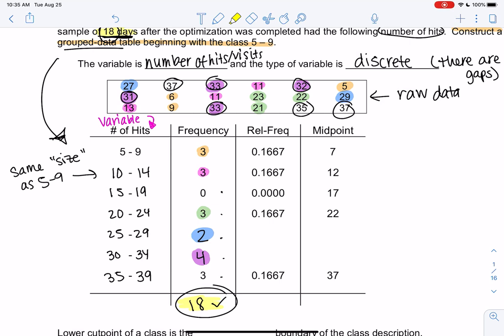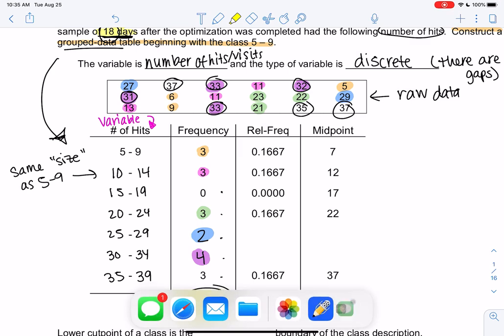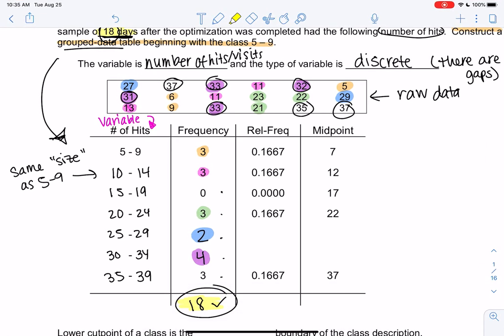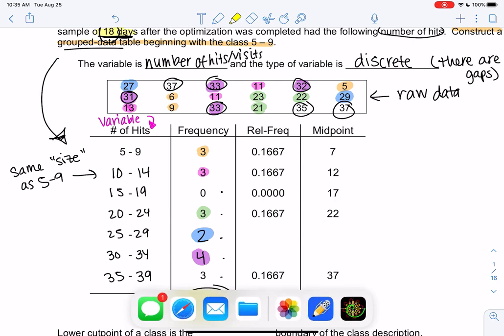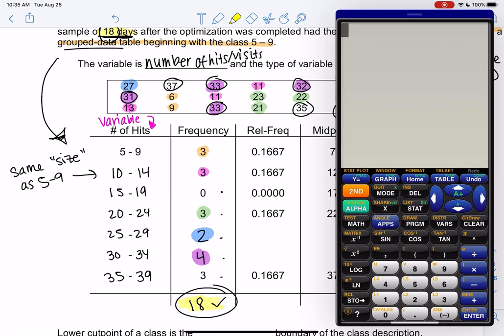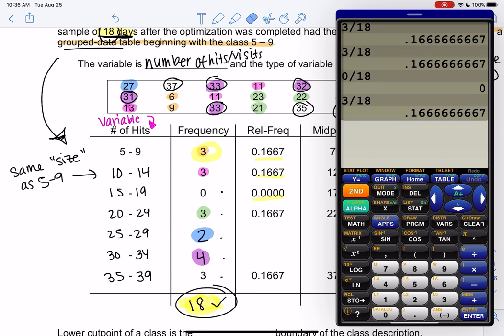So let's jump into relative frequency. So relative frequency, I'm going to pull the calculator up. Okay, we got the calculator. So relative frequency, what we're going to do is we're going to do the frequency divided by the total. So you'll see for the first one, I did three divided by 18 and I got 0.1667. So basically it's like how many out of the total. The next one would be three divided by 18. We get the same number. Zero out of 18 should be clear that it's zero. Three out of 18, we get that 0.1667 again. We're rounding up because we have a six to the right.